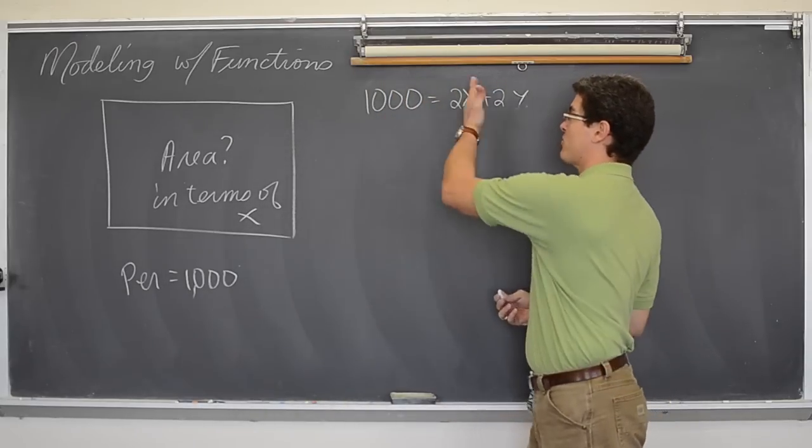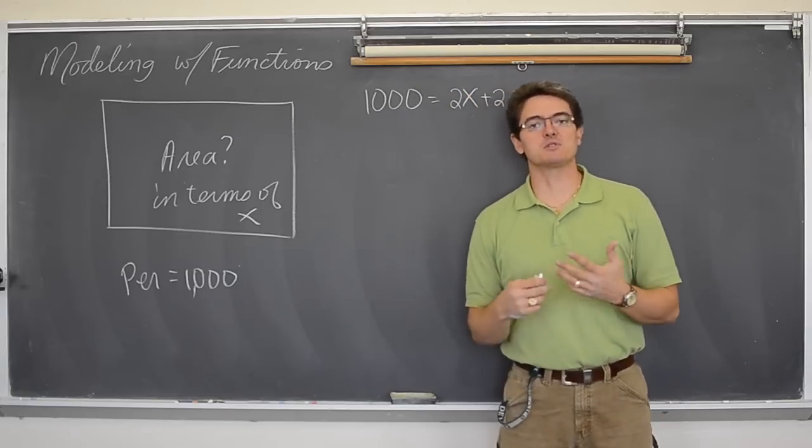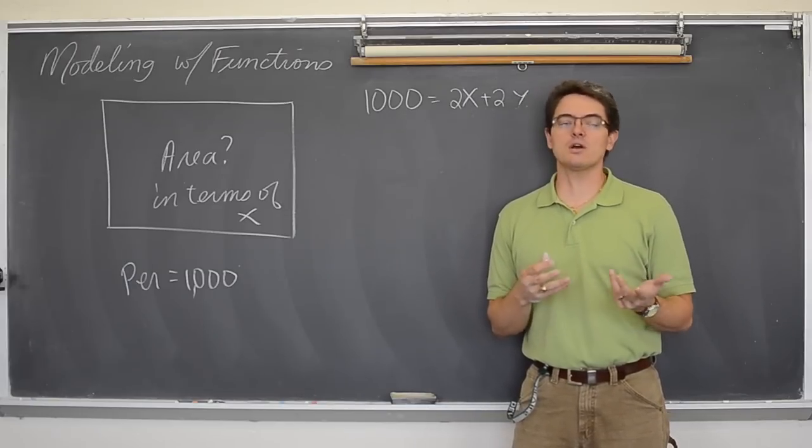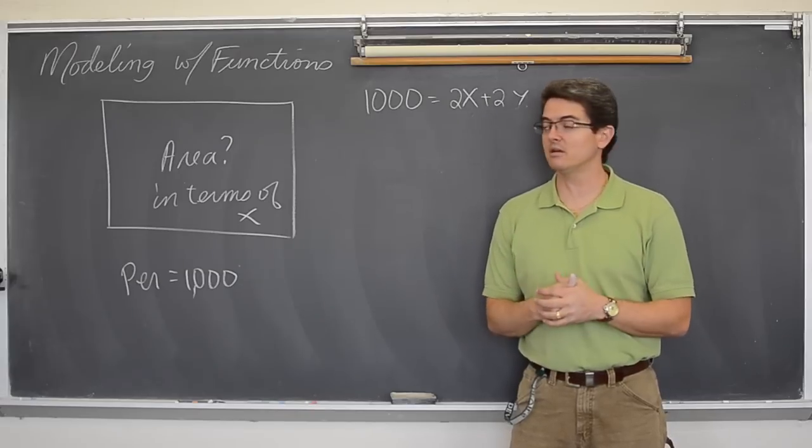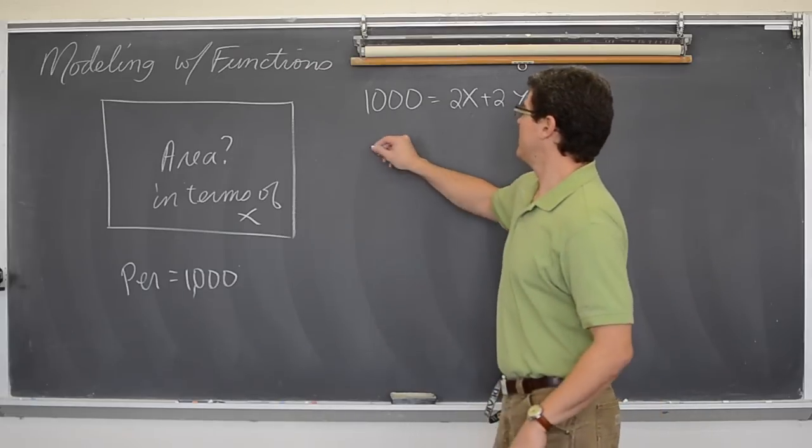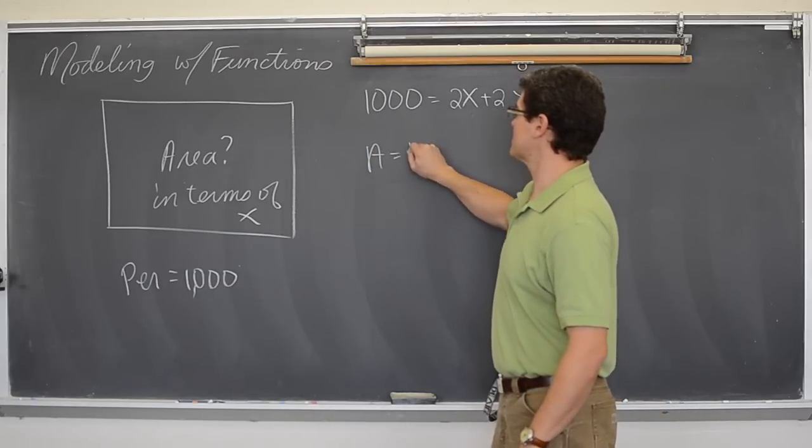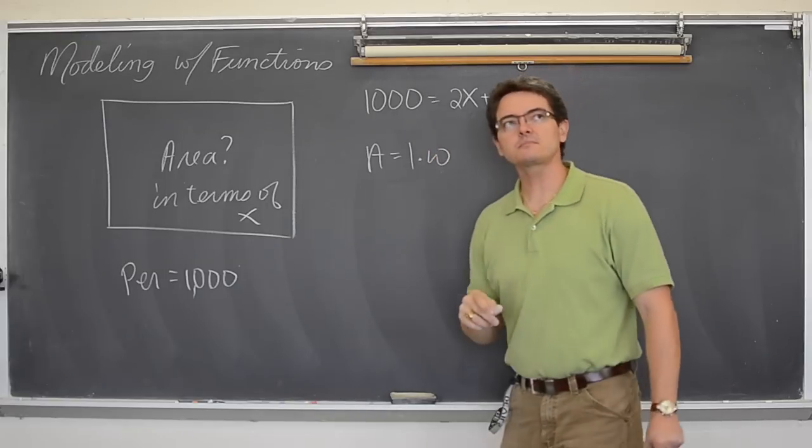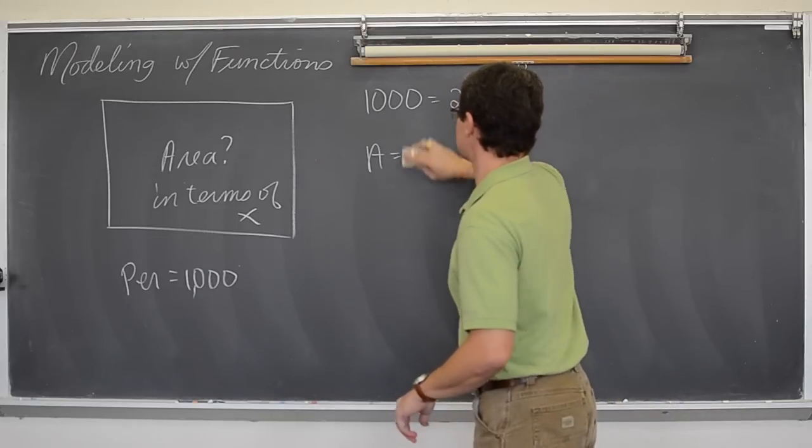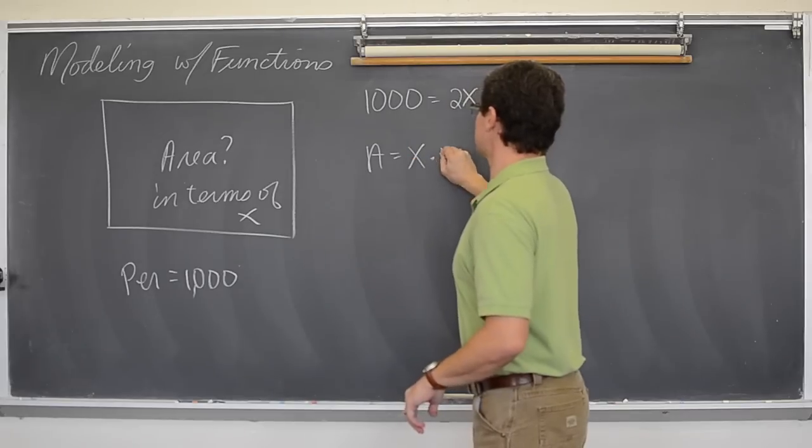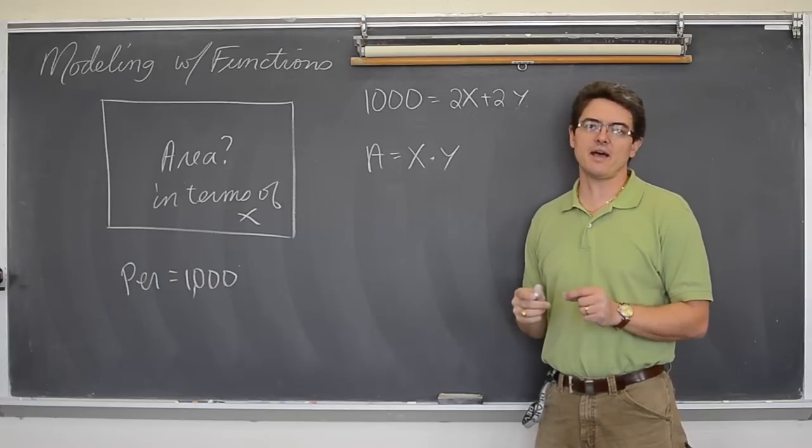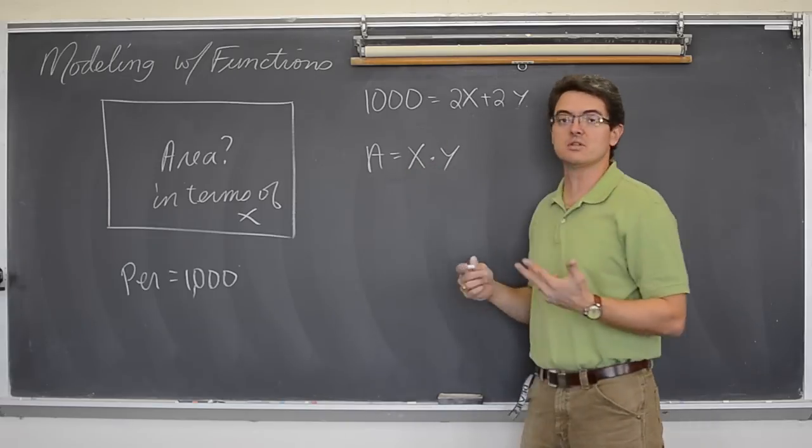Great! There is perimeter, and it is in terms of two variables. But the question is not about making a formula for perimeter, the question is about finding an area formula. So how do you find the area of a rectangle? Well, that is length times width. So the area is length times width. Or because I am using x's and y's, the area is x times y.